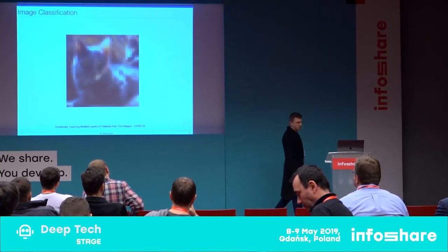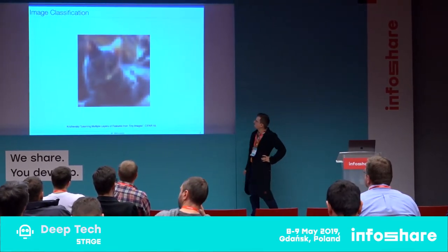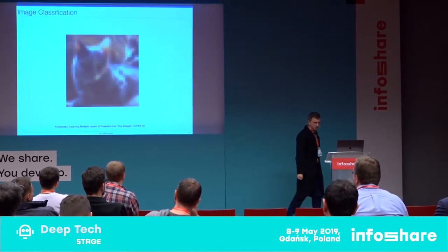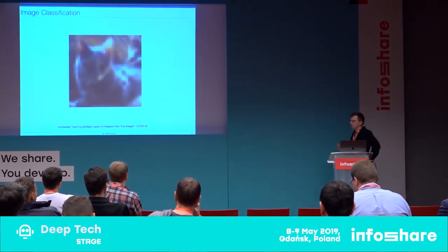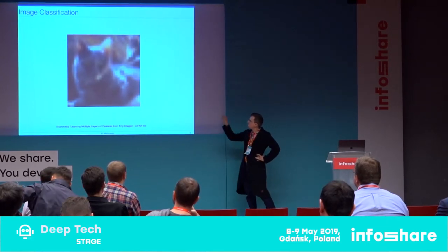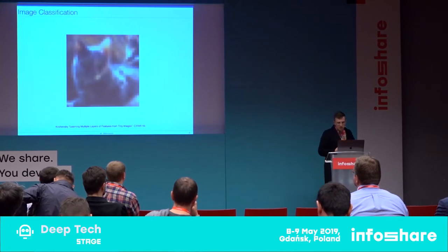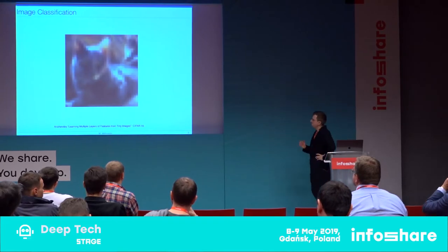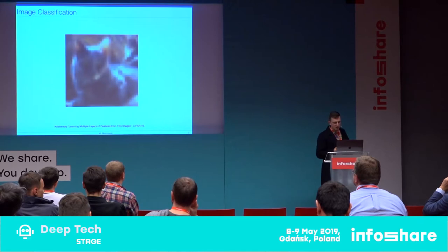In image classification, we have an image — relatively low resolution, this particular one is 32 by 32 — and there's one question associated with all images: what is the content of this image? The answer is a category. In the CIFAR-10 dataset there are 10 categories such as cat, dog, truck, etc. The whole task is to map this image into one of those 10 categories.